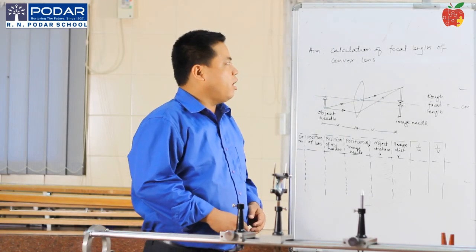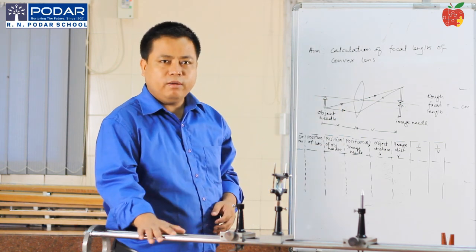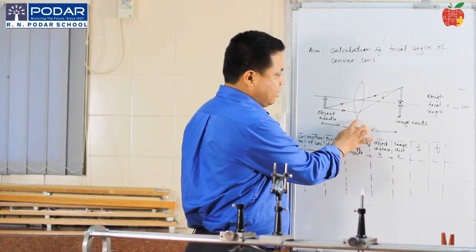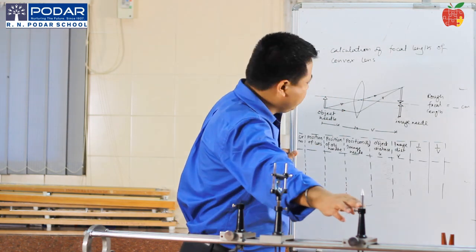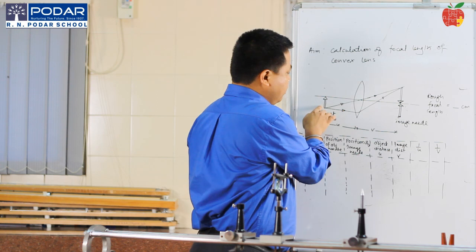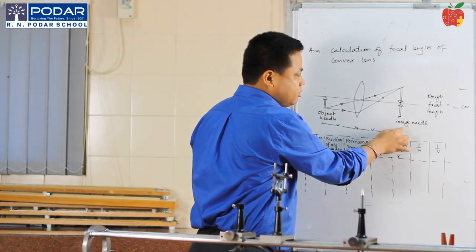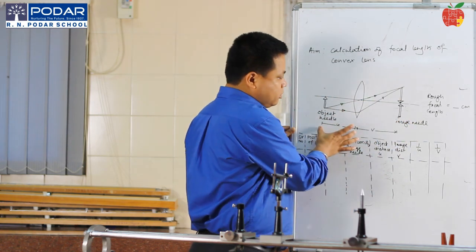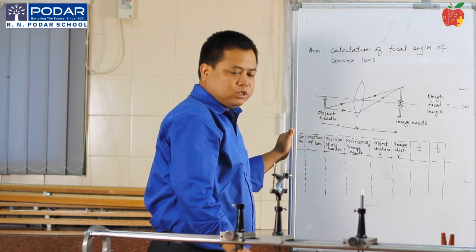Today we are learning how to calculate the focal length of a convex lens using our optical belt system. This is the ray diagram — we have the lens, the object needle, and the inverted image of this object found over here using an image needle. We will calculate the position of the image, so this distance becomes the object distance and this is the image distance.